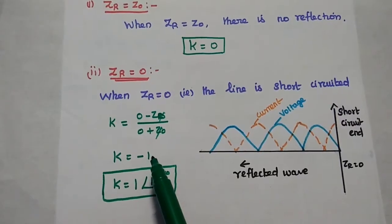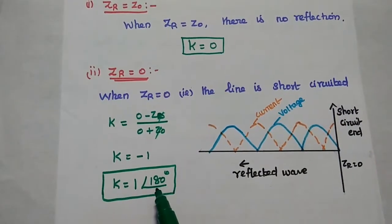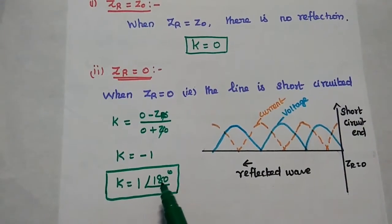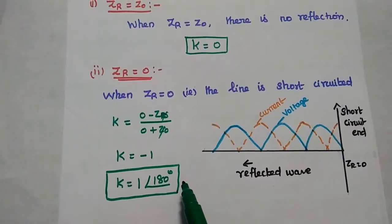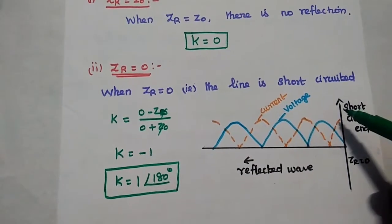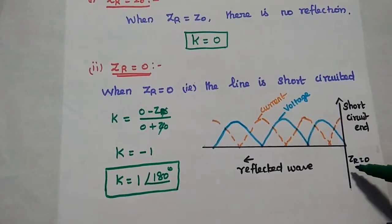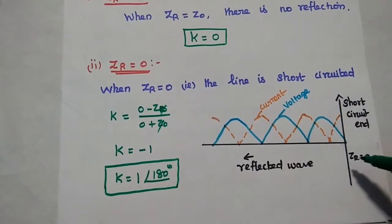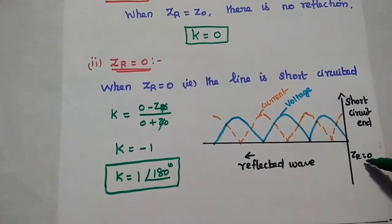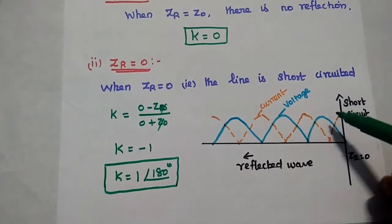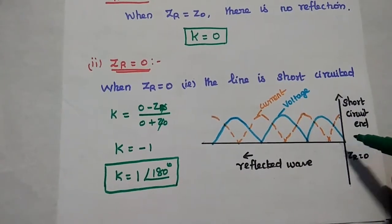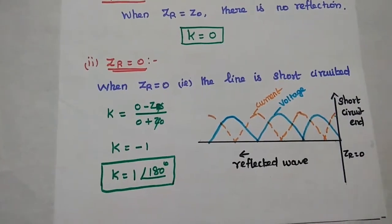If you convert this into polar form, the magnitude is 1 with a phase of 180 degrees. In this diagram, at this receiving end, it is short-circuited. For a short-circuited line, the impedance is 0. Here, the current is maximum and the voltage is minimum.